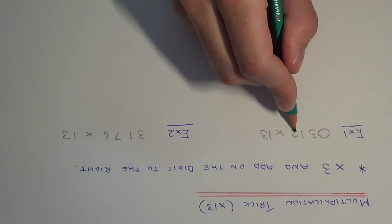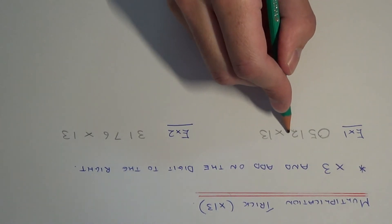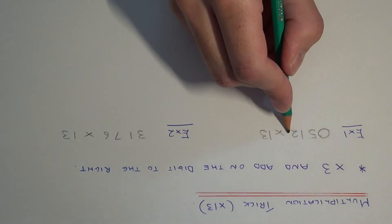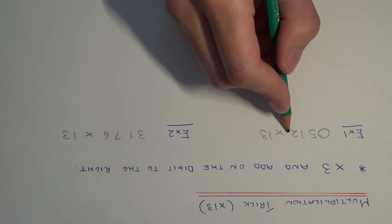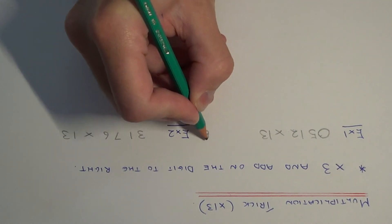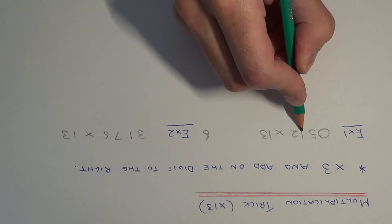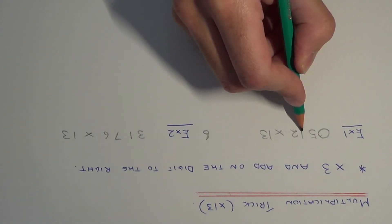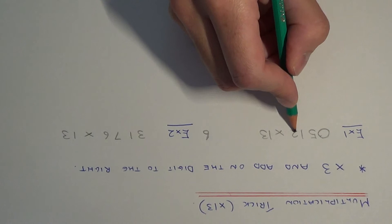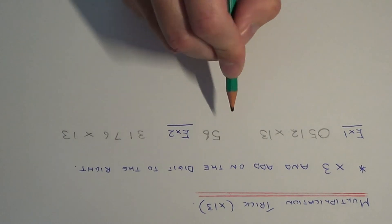Begin with the 2: 2 times 3 is 6, add on the number to the right — well there's nothing to the right of the 2, so our final digit of our answer will be 6. We then move on to the 1: 1 times 3 is 3, plus the digit to the right, so 3 add 2 is 5. That's our next digit of our answer.